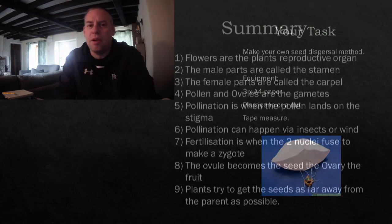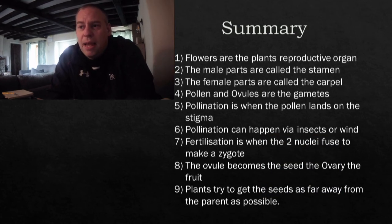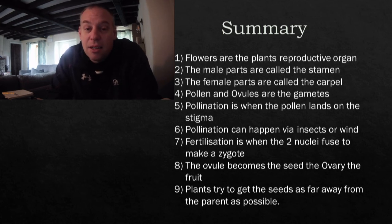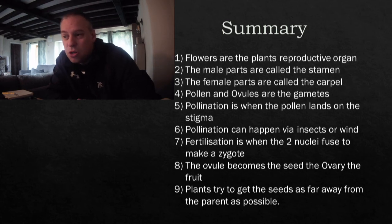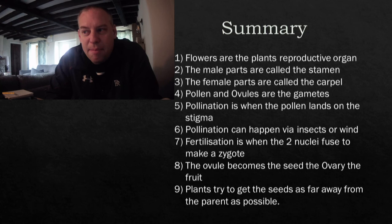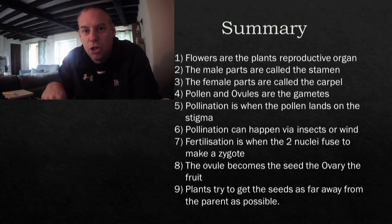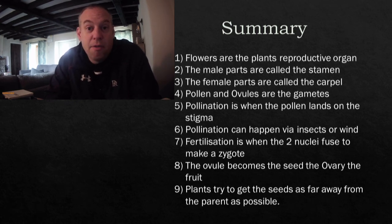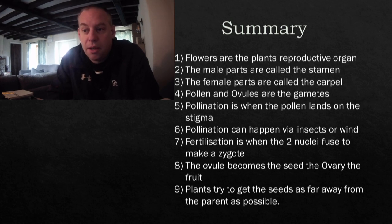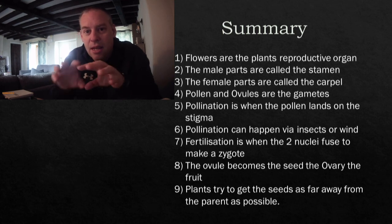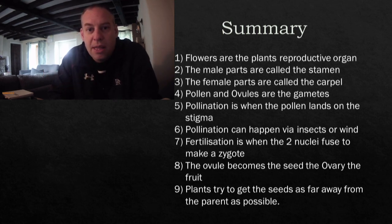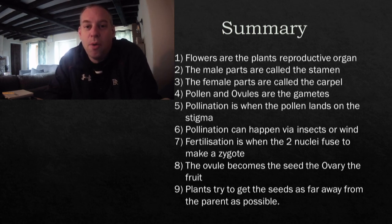Let's summarise everything we've covered. Flowers are the sexual reproductive organs of a plant. Inside the flower you have the male parts — the stamen — and the female parts — the carpel. They both produce gametes: pollen and ovules. Pollination is where pollen lands on the stigma and the pollen tube grows down. Fertilisation is when the two nuclei fuse together to form a zygote. We have different pollination vectors — insect or wind — allowing pollen to go from one parent to another. When fertilised, the ovule becomes the seed and the ovary becomes the fruit. Finally, we have methods of seed dispersal so seeds can get as far away from the parent as possible.